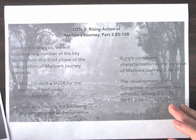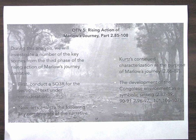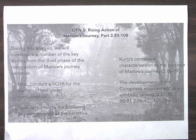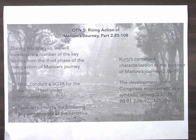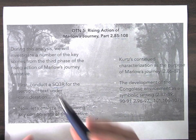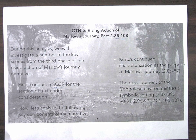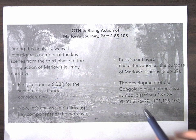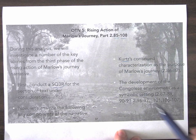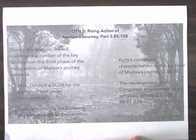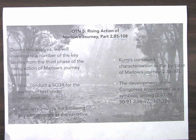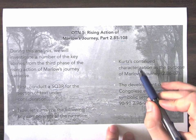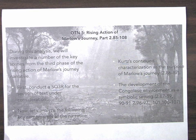So let's go ahead and turn our attention back to OTN 5 and look at the development of Marlowe's quest for an idea, an ideal at the back of his life. So on Friday, in our SQ3R, we basically introduced this extended section of text. We're going to be looking at the beginning, just a few pages in the beginning of the section of text, and we're going to be spending a couple days looking at the development of the Congolese environment as Marlowe grows more and more acquainted, more and more sort of pressed into the heart of this natural environment. But before we do that, we're just going to look at Marlowe's continued characterization as the purpose of Marlowe's journey.